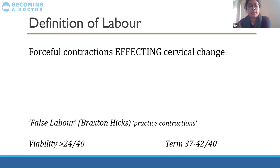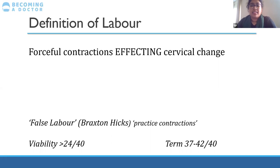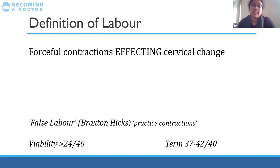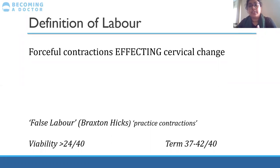In terms of delivery, the viable gestation is considered about 24 weeks. A term baby is considered between 37 and 42 weeks, but generally unless there's a strong reason, we wouldn't deliver babies at 37 weeks — it's usually around 39 to 40 weeks. However, if you're going beyond 41 weeks — post dates — that's when we start offering induction of labor.